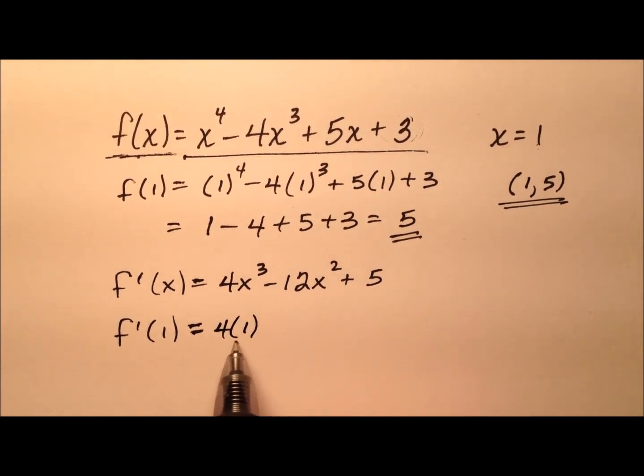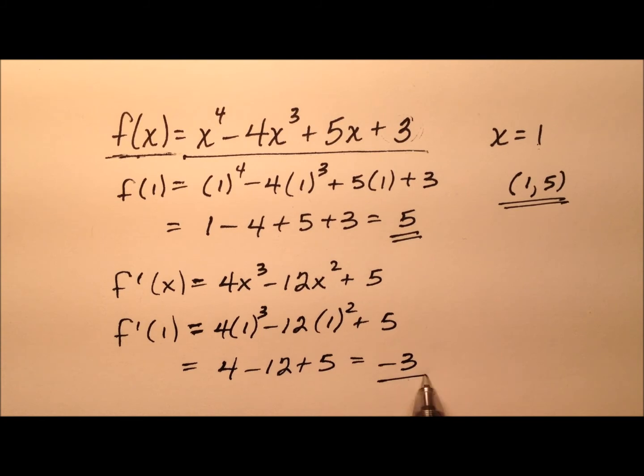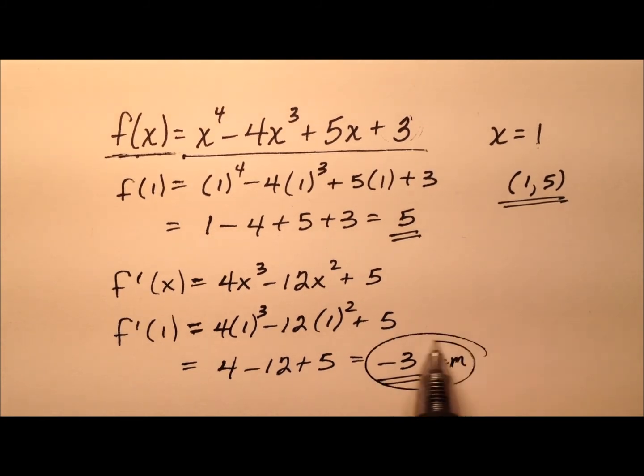So it looks like it will be 4 times 1 cubed minus 12 times 1 squared plus 5. So 4 minus 12 plus 5, and that looks like it's going to be negative 3 for my slope.